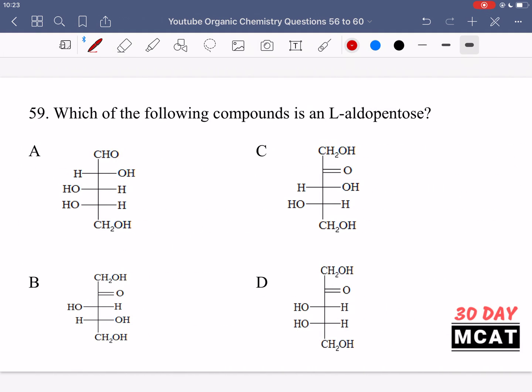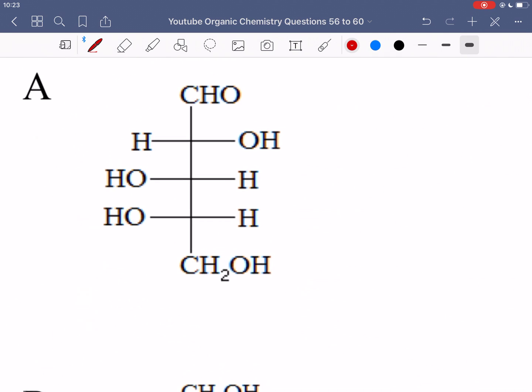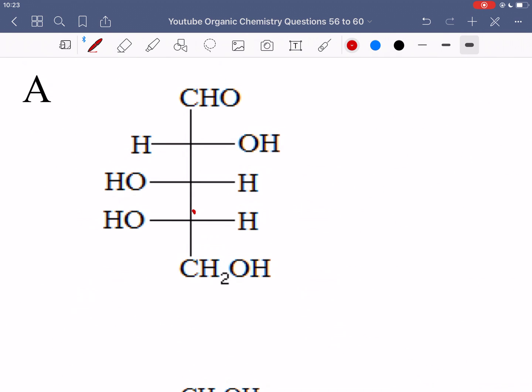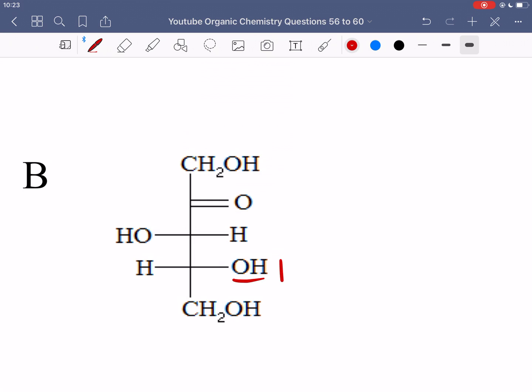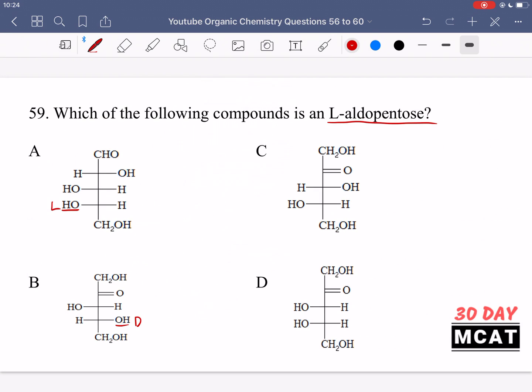In question 59, we're asked which of the following compounds is an L-aldopentose. So first of all, for something to be L means that when we look at this, the last carbon that has some chirality, which would be this one here, the second carbon from the bottom, if the OH group, if that is on the left, then it's an L-sugar, otherwise if it's on the right, then it's a D-sugar. So the ones that have it on the right, we can remove it, and that would just be option B.